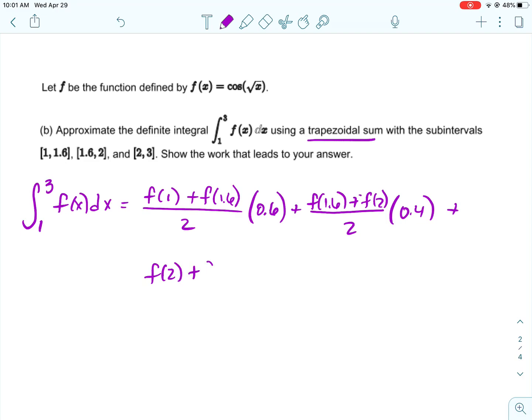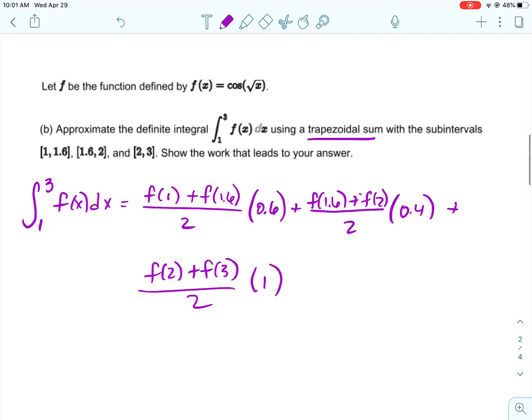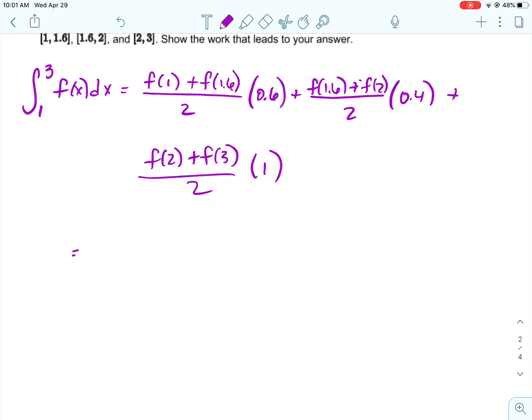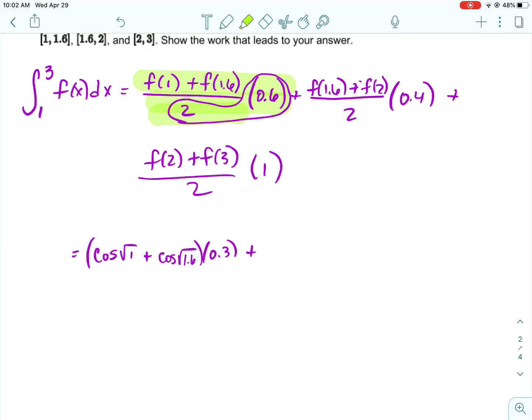And then the bases are f(1.6) and f(2) divided by 2 times the width. So looking at this first one, I am going to go ahead and multiply 0.6 by 1.5. And so I know that's going to be 0.3. And then f(1) is going to be the cosine of the square root of 1. And then f(1.6) is the cosine of the square root of 1.6. So that's going to be our first section.